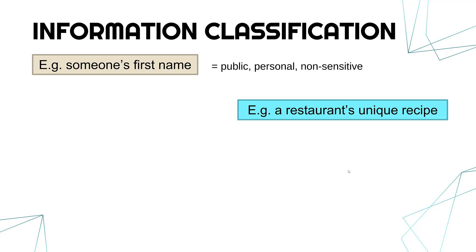Consider a restaurant's unique recipe — something like KFC's unique blend of spices. This is business information. It's private because a restaurant wouldn't publish its unique recipe, and it's sensitive because leaking it would have bad consequences for the business. The restaurant might tell staff this is confidential information, meaning only perhaps the chefs know the recipe. If it leaked you might get sued, but you wouldn't be sent to prison.